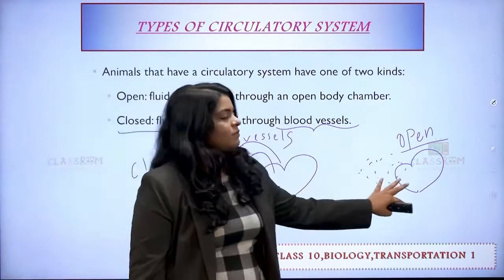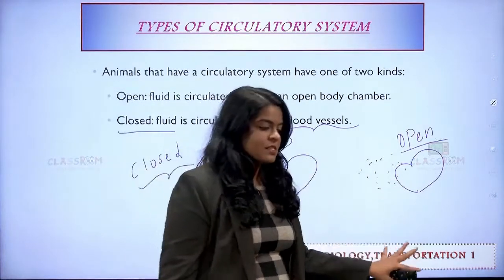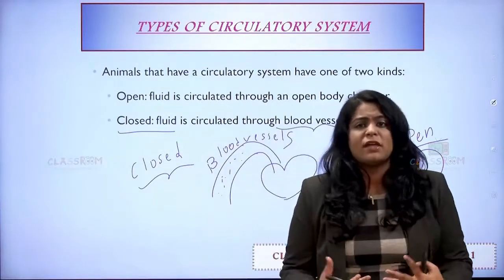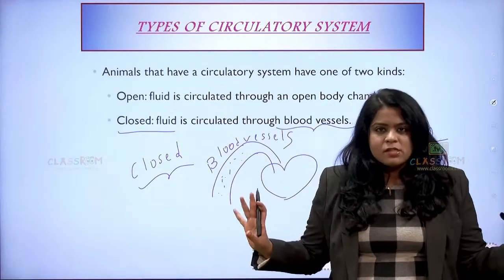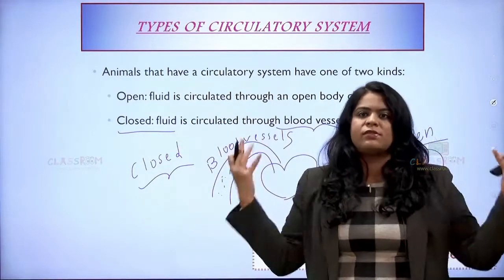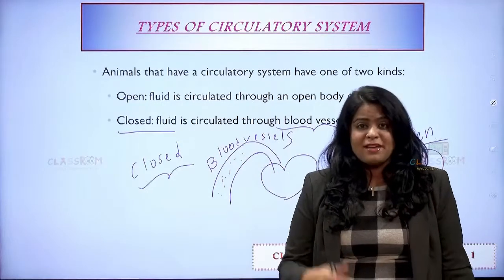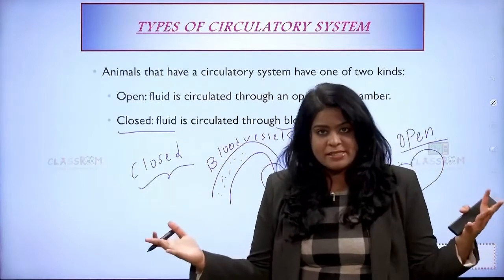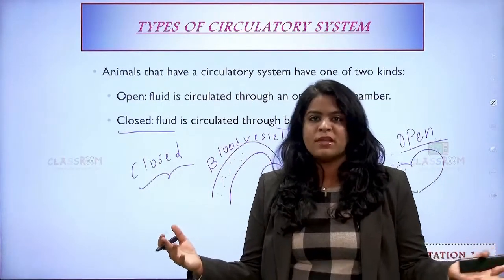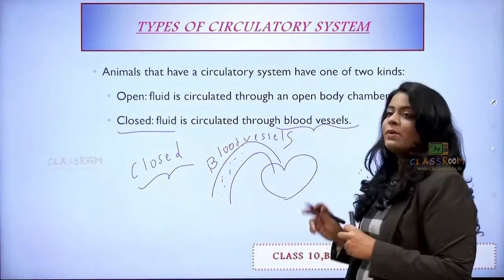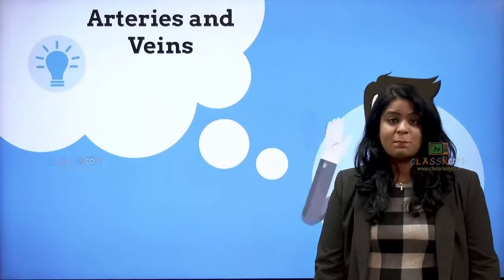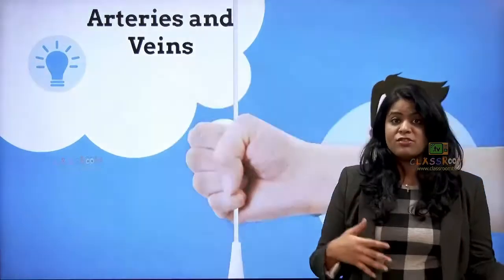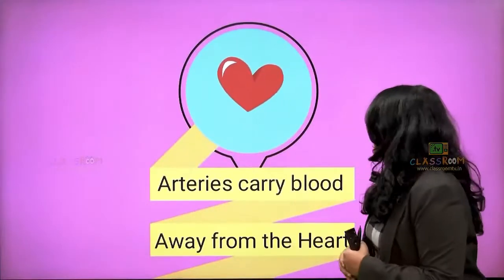Open type of circulatory system means there are no vessels — whatever blood there is just keeps flowing everywhere. We are mammals and we have a closed type of circulatory system. Now let us talk about blood vessels. We have arteries, veins and capillaries. The function of arteries is they carry blood away from the heart. And what is the function of veins? They carry blood towards the heart.